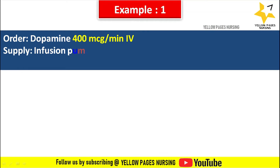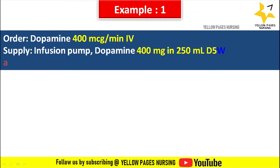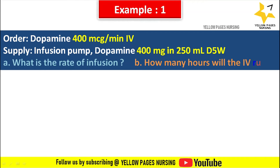Doctor's order reads: dopamine 400 mcg per minute IV. Supply: infusion pump with dopamine 400 mg in 250 ml D5 water. What is the rate of infusion and how many hours will the IV run?